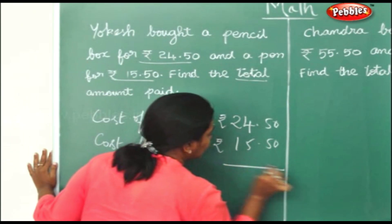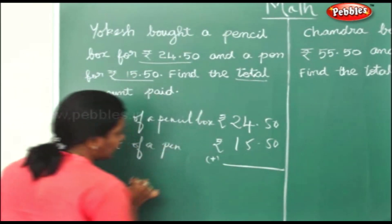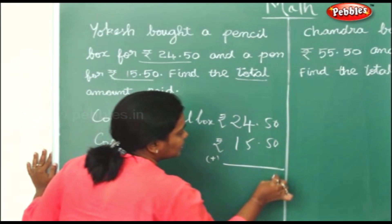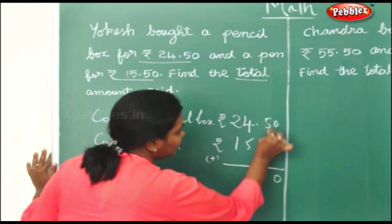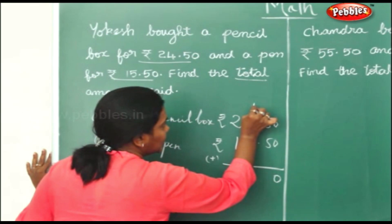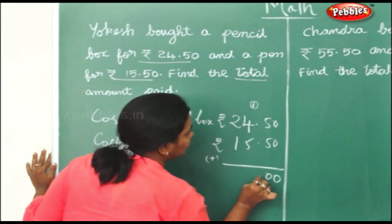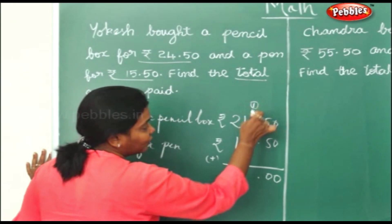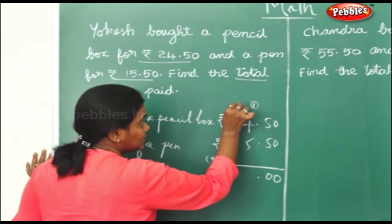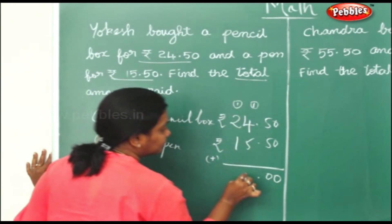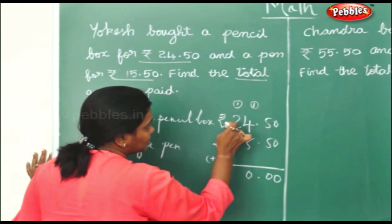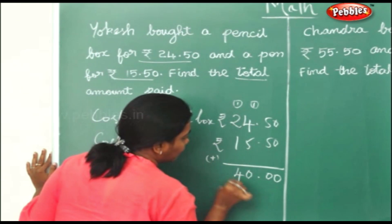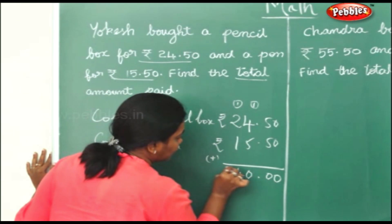So we will add these both to find the total amount paid. 0 plus 0 is 0. 5 plus 5 is 10, carry it down. 4 plus 1 is 5. 5 plus 5 is 10 again. 1 plus 2 is 3. 3 plus 1 is 4. Rupees 40.